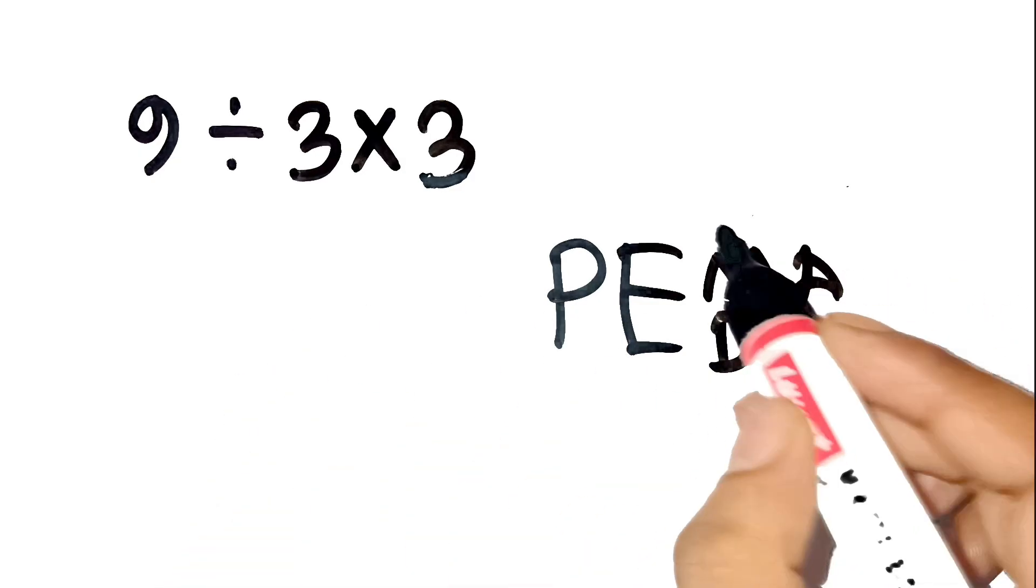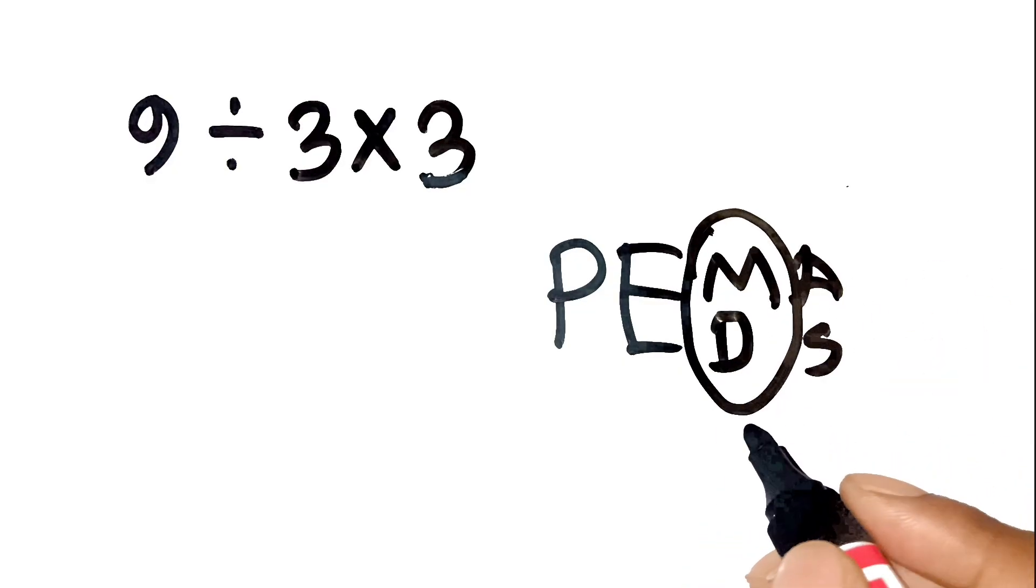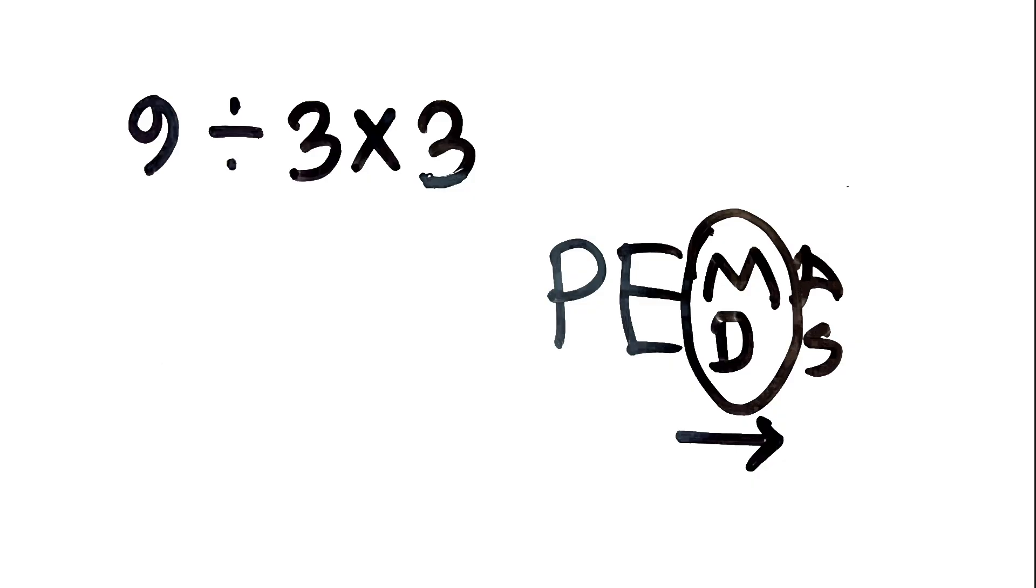But here's the key. Multiplication and division are actually on the same level, and you have to solve them from left to right. That's where most people get tripped up.